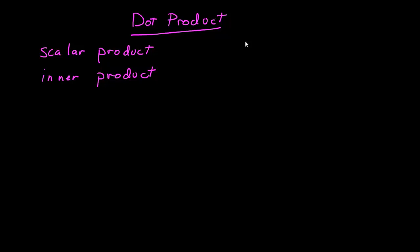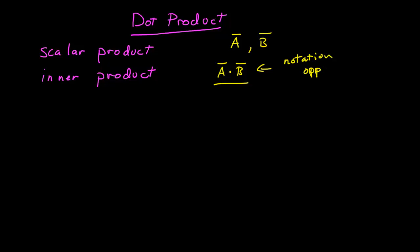In this video I want to talk about the dot product. The dot product goes by several different names: the scalar product or the inner product are the three common ones. The dot product is an operation between two vectors. So let's give ourselves two vectors — vector A and vector B. The notation for this operation is a dot between vector A and B, which is the notation for taking the dot product, scalar product, or inner product of two vectors.